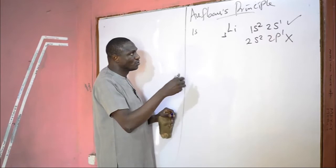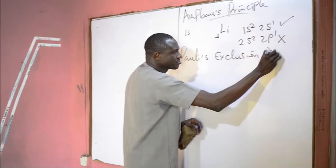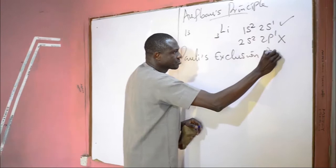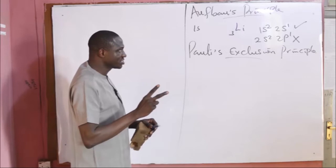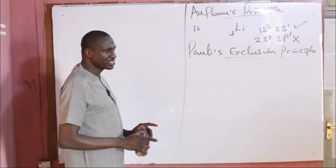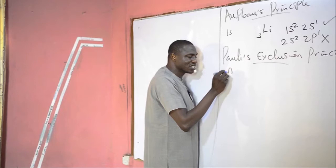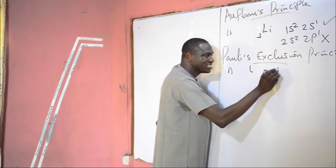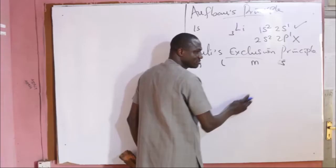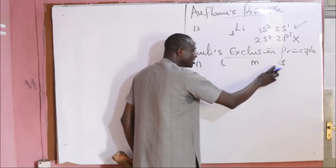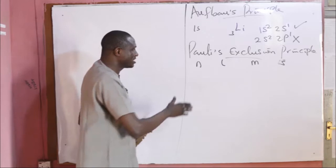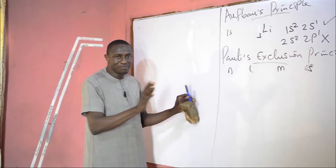The second rule or principle is the Pauli Exclusion Principle. This principle states that no two electrons in the same orbital can have the same possible set of four quantum numbers. When they have the same principal, the same azimuthal, and the same magnetic quantum numbers, they must not have the same spin. It is not possible for two electrons in the same orbital to share all four identical quantum numbers.